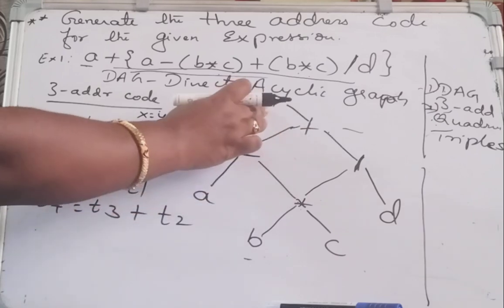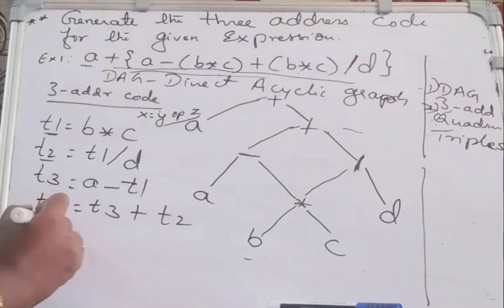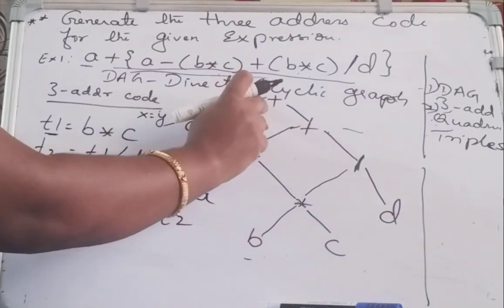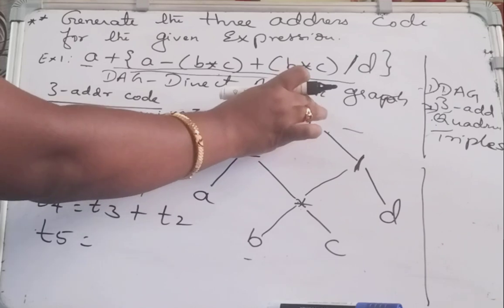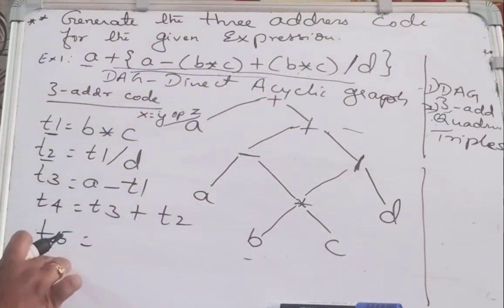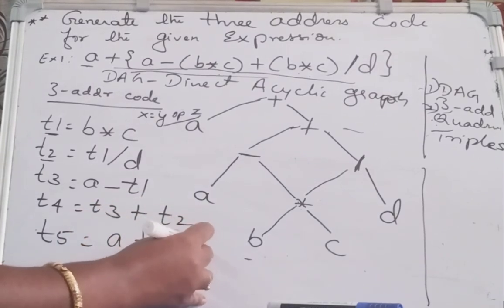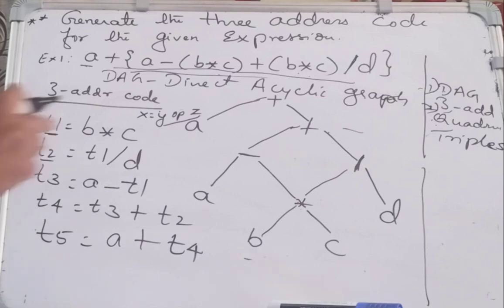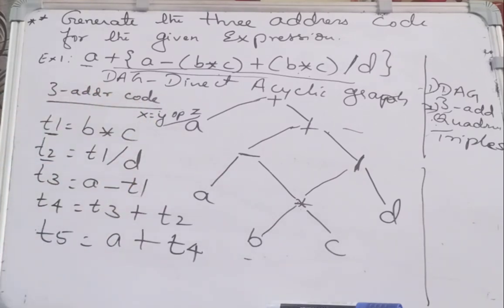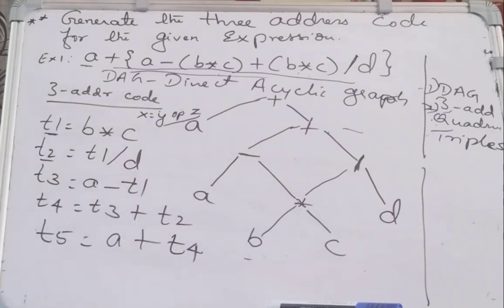The next is the entire result plus A. So take the next temporary register T5. T5 = A + T4, because the whole subtree value is present in T4. The first rule is enough for us to generate the three address code for this DAG. So for this DAG we have generated the three address code instructions.